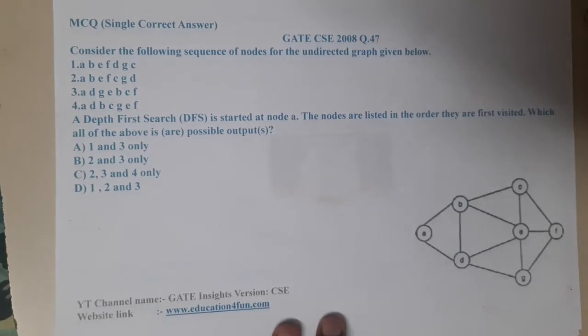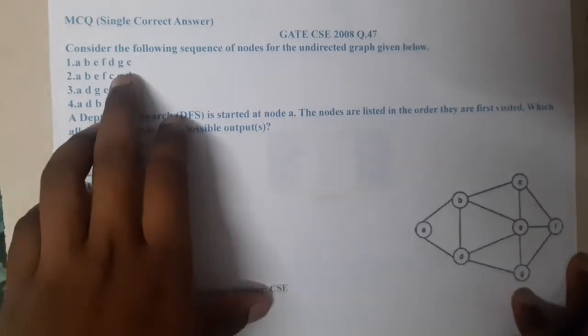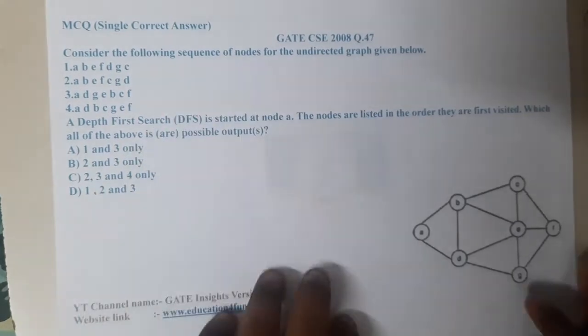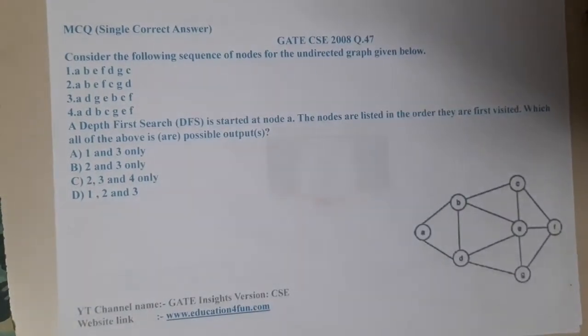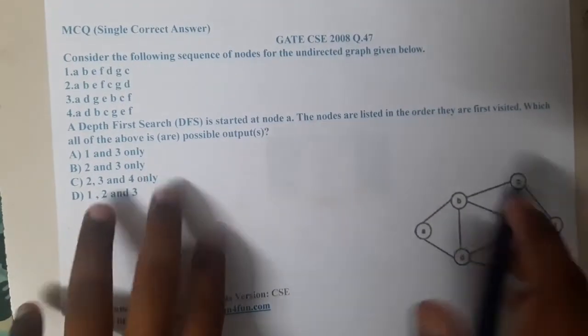Hello guys, we are back with our next lecture. In this lecture, let us continue with the next topic that is GATE CSE 2008 Question 47. The question is: consider the following sequence of nodes for the undirected graph given below.